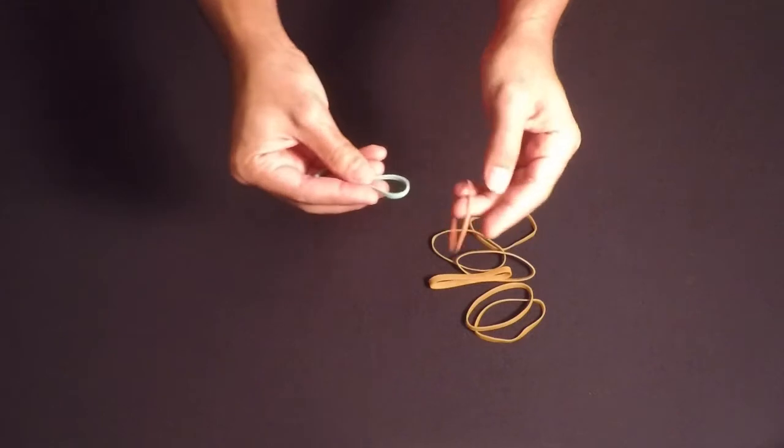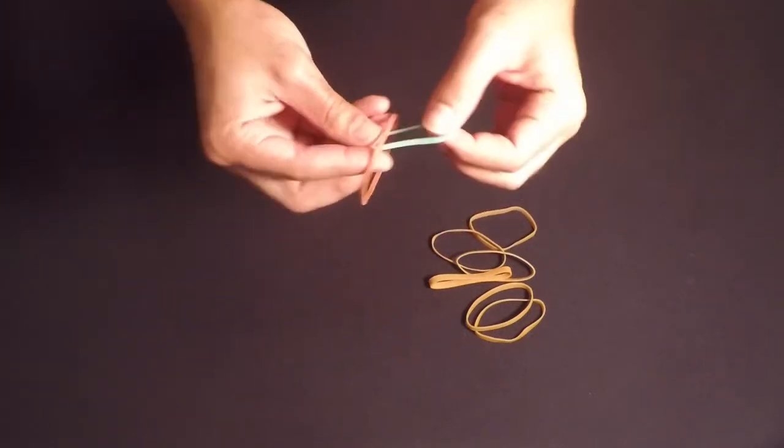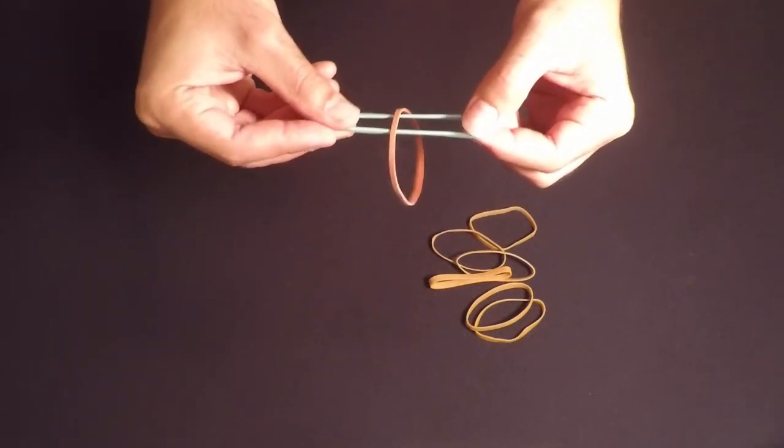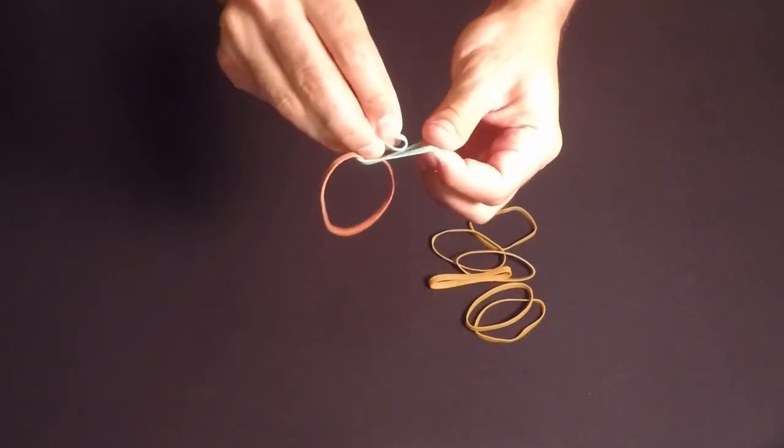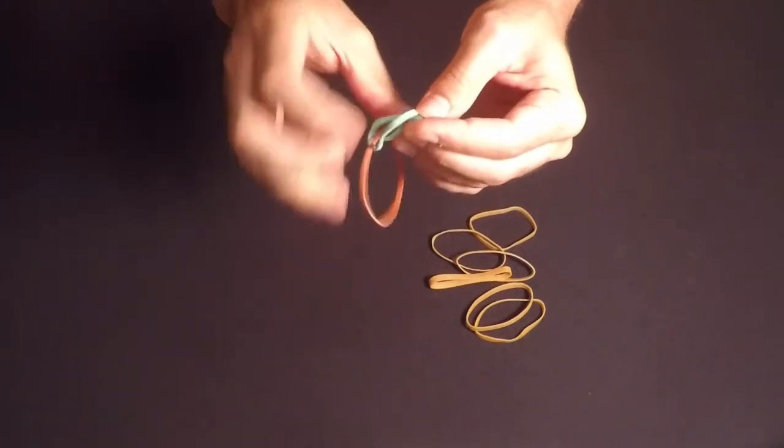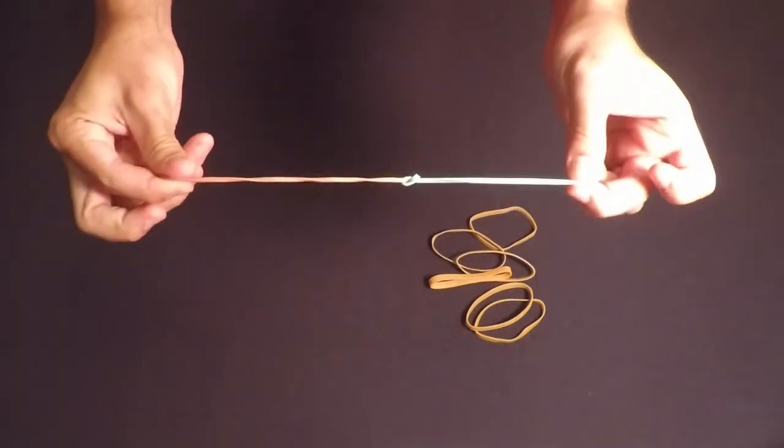Take two rubber bands and pull one band through the center of the other into a T shape. Now, pull one end of the upper rubber band over the lower band and through itself. We've now doubled the length of our rubber band.